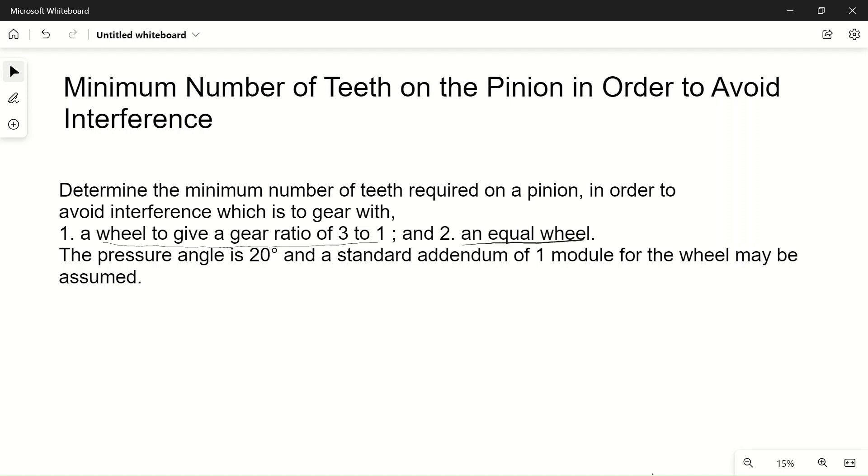What is given? Let's note it out. In the first case, the gear ratio is 3 divided by 1, which is 3. In the second case, it is 1.